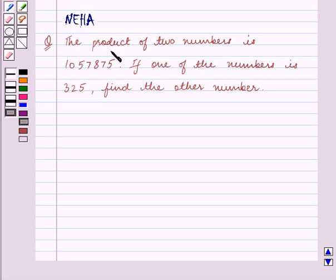The product of two numbers is 1057875. If one of the numbers is 325, find the other number.